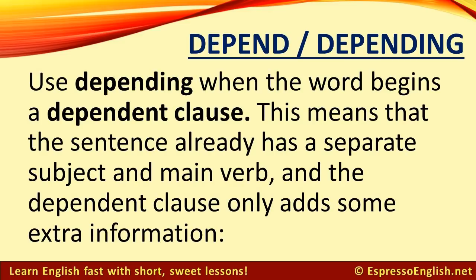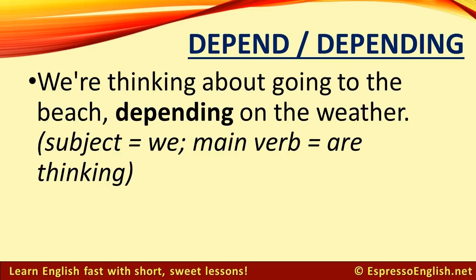We use depending when the word begins a dependent clause. This means that the sentence already has a separate subject and main verb, and the dependent clause only adds some extra information. For example: We're thinking about going to the beach, depending on the weather. The subject is "we" and the main verb is "are thinking."